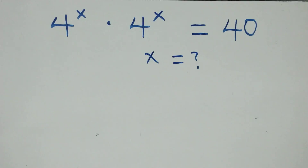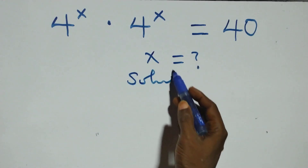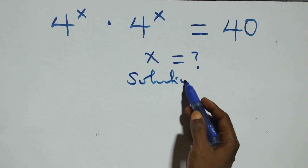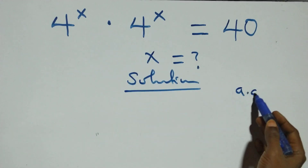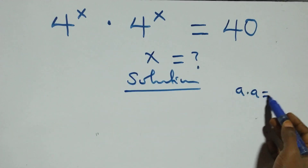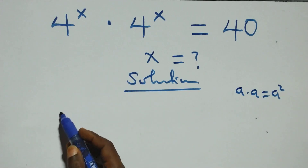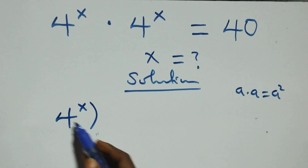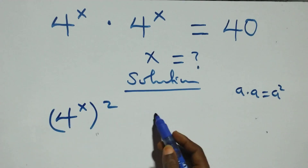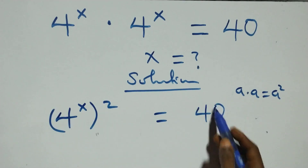Hello, you're welcome. How to solve this nice exponential equation. What we have here is as follows: when we have a times a, this is the same thing as a squared. So multiplying, we have 4 raised to power x times 4 squared, equals 40 on this side.